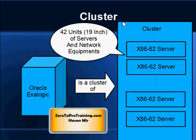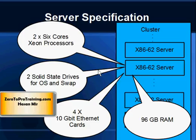Multiple computers working together and connected act as one big computer, which is more efficient than computers sitting separately and working independently. The specs for one server within the cluster are: two six-core Xeon processors, two solid-state drives just for the operating system and swap area, four 10-gigabit Ethernet cards, and 96 gigabytes of RAM. Solid-state drives have no spinning mechanism and are very fast.